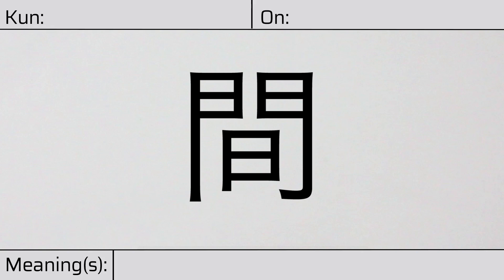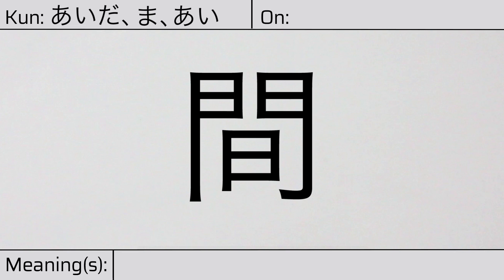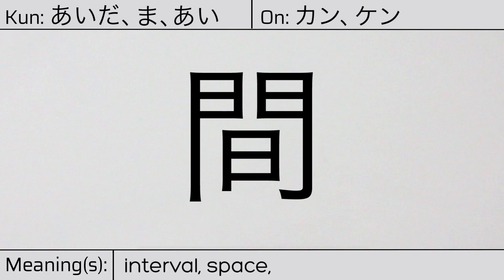Welcome to this lesson on Japanese Kanji. Today, we'll be discussing this character. This Kanji has kunyomi or Japanese readings of aida, ma, or ai. And it has onyomi or Chinese readings of kang or ken. This character has the meanings interval, space, or between. Here is the stroke order.